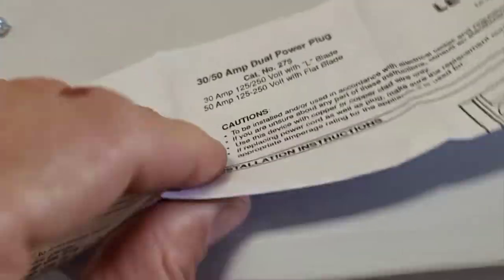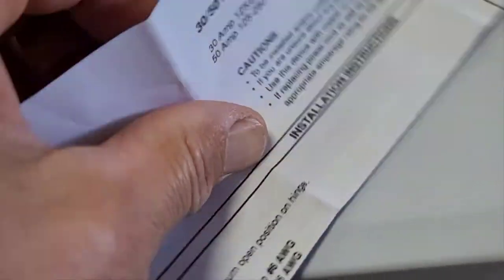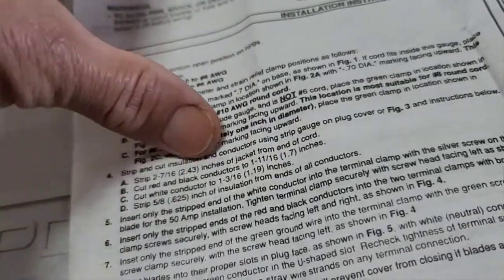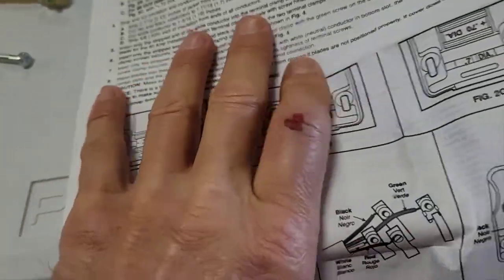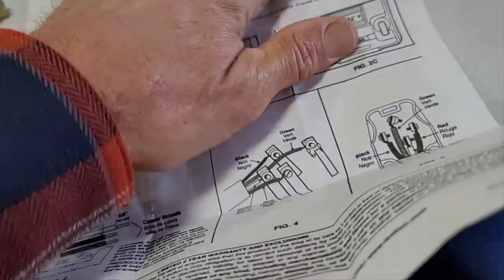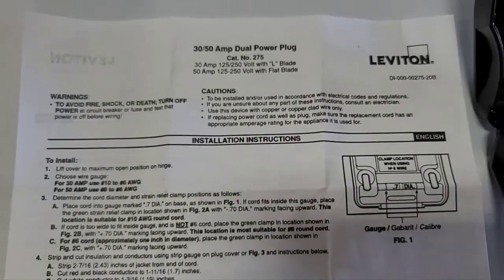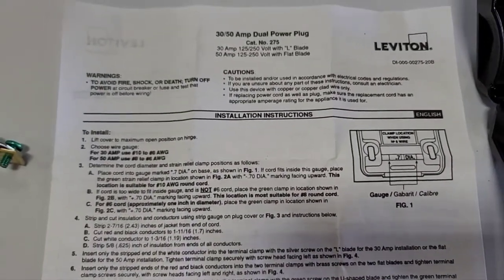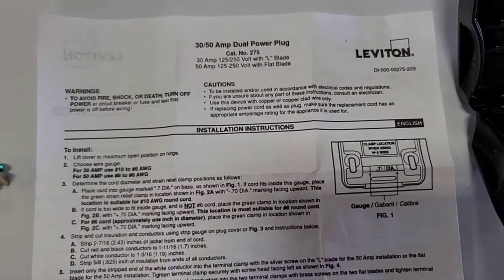This is where the instruction booklet is going to be handy because you can put the strain relief this way if you have a smaller wire. You can turn the strain relief this way if you have a bigger wire. Some people can't read like me and they like to watch YouTube videos to hear the verbal instructions.